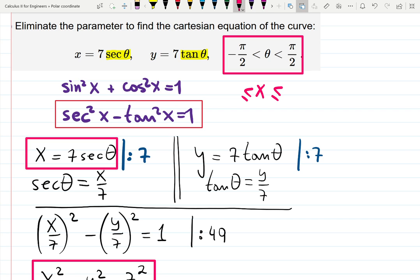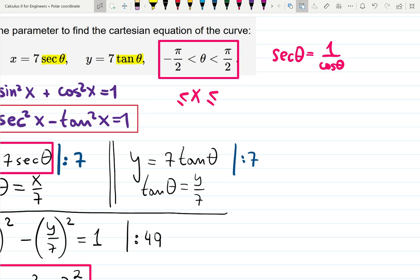Secant is 1 over cosine. Secant theta is 1 over cosine theta. Well, cosine theta is 0 at pi over 2. So, we can say then that since cosine at pi over 2 and minus pi over 2 is 0 and division by 0 gives you infinity, definitely x can go up to infinity. But what is the minimum value for x?